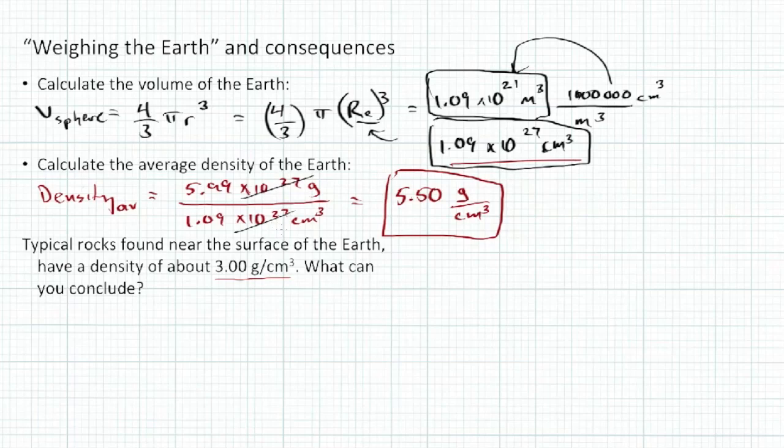Let's take a look at this question down here. Rocks found near the surface of the earth have a density of 3 grams per centimeter cubed. So it's much less than our average density right here.